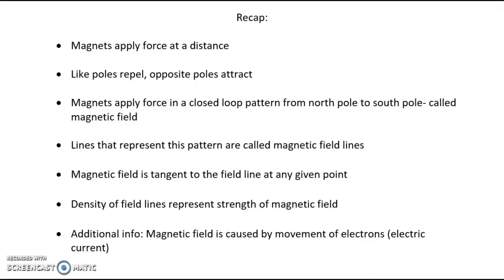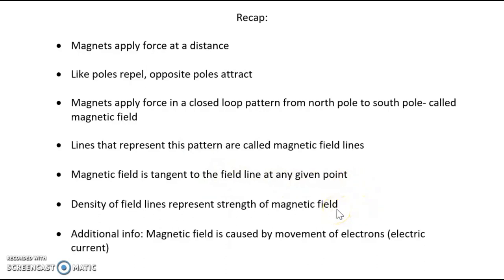For a quick recap: magnets apply force at a distance, as seen with the iron filings and the magnets. Like poles repel and opposite poles attract — the north pole was repelled from the north pole but attracted to the south pole. Magnets apply force in a closed loop pattern, and these loops emanate from the north pole and go to the south pole — this is called the magnetic field. The lines representing this pattern are called magnetic field lines, and the magnetic field is always tangent to the field line at any given point. The density of field lines represents the strength of the magnetic field — the more dense the field lines, the stronger the magnetic field.